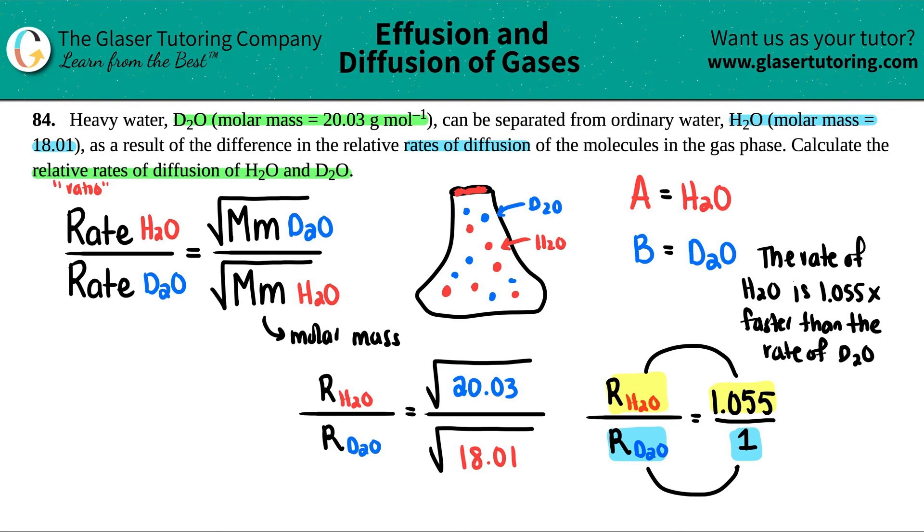Than the rate of D2O. And that makes sense because remember, the higher molar mass is always slower. The lower molar mass is always faster. So it makes sense that H2O should be a little bit faster than D2O because it has a lower molar mass.